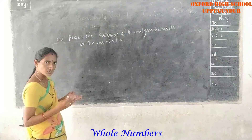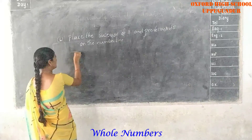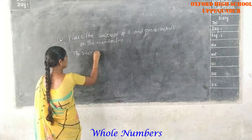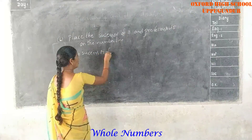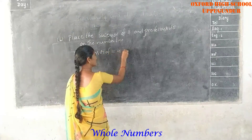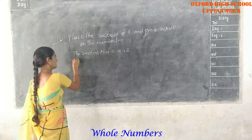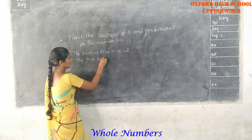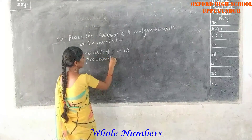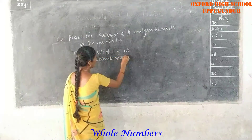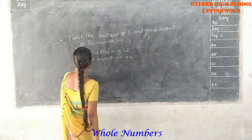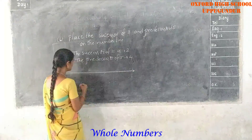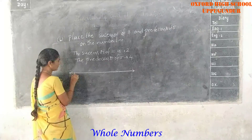We can solve the answer. The successor of 11 is 12, and the predecessor of 5 is 4. Now draw these two numbers on the number line.